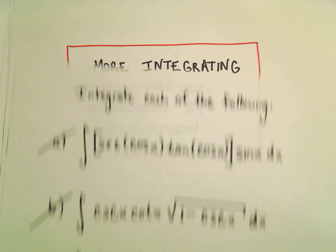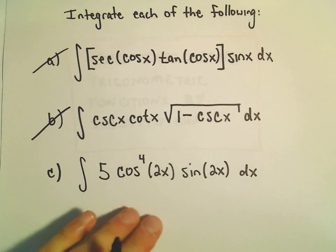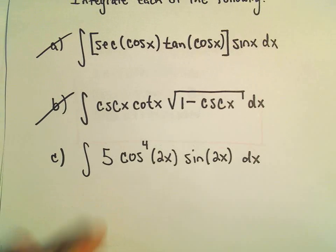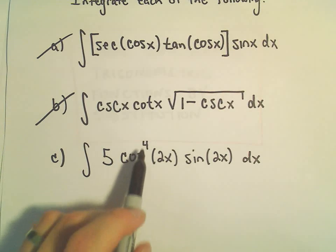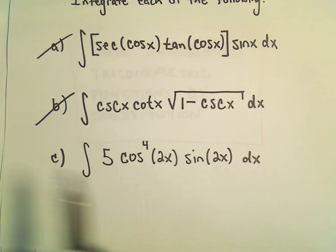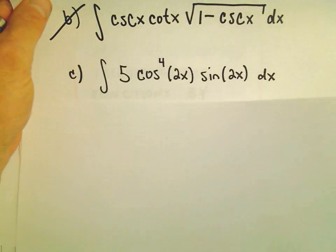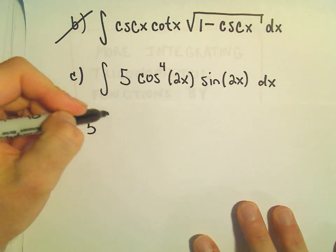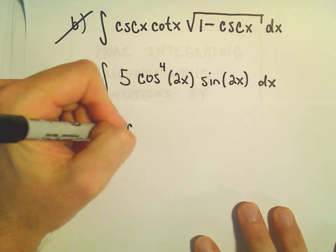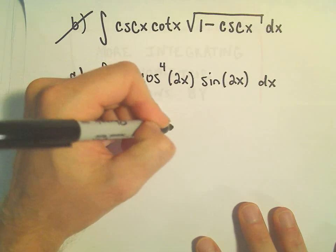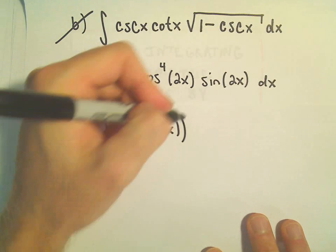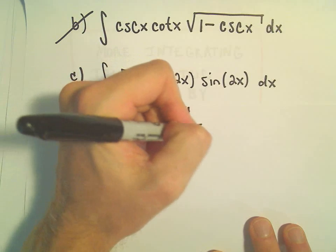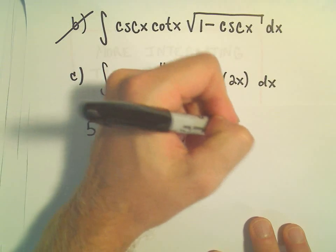Alright, so one more example here of integrating a trig function using some substitution. So here we have 5 times cosine to the 4th of 2x times sine of 2x dx. I'm going to rewrite this a little bit. I'm even going to pull the 5 out front. This is the same thing as cosine of 2x all raised to the 4th power times sine of 2x.